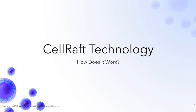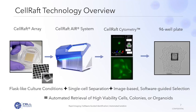Now I'm going to talk about how the Cell Raft technology actually works — how we use the Cell Raft Array to enable IPSC workflows. The whole process starts with our consumable, the Cell Raft Array, where you seed your IPS cells. You can then perform image-based software-guided selection of cells or colonies of interest using the Cell Raft AIR instrument. Using our proprietary software, Cell Raft Cytometry, we can look at every single cell raft in the array and determine exactly which rafts contain your colonies of interest. After identifying those rafts, we can automatically retrieve them with the AIR instrument to allow for outgrowth of selected colonies for downstream applications.